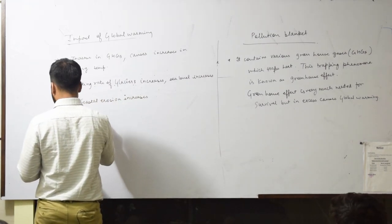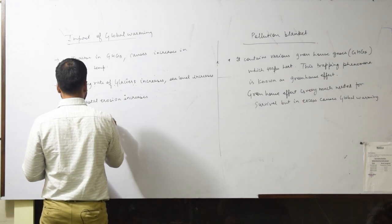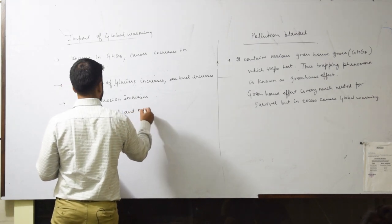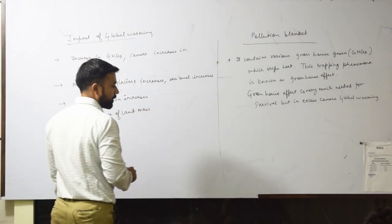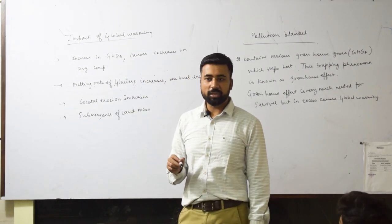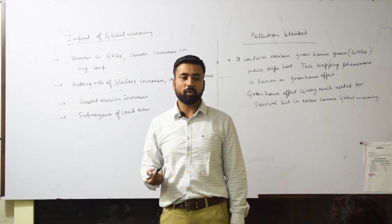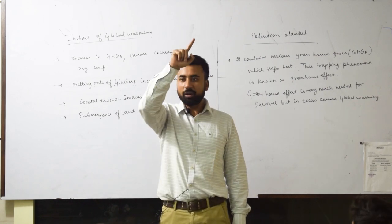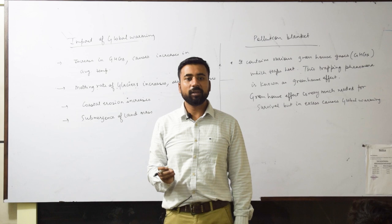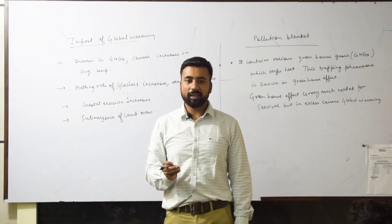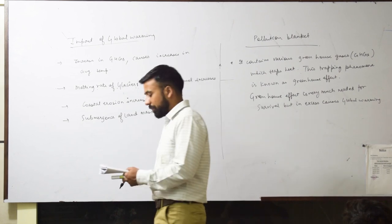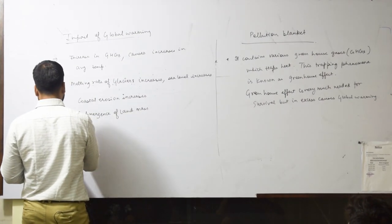Then submergence of landmass. Submergence of landmass. In Andaman and Nicobar Islands, even Indra Point is now totally submerged. Indra Point is the southernmost point. Indraprastha is the northernmost point. Indra Point is the southernmost. It is now submerged. Even there were few islands in the Bay of Bengal which have already submerged because of global warming. So submergence of landmass.